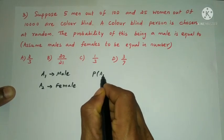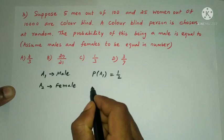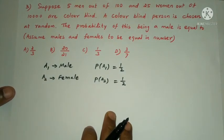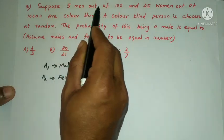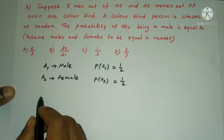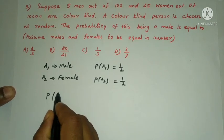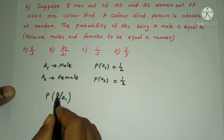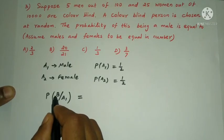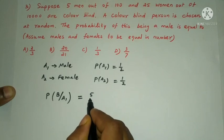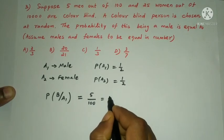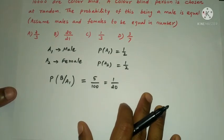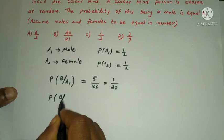P(A1) = 1/2, P(A2) = 1/2. Five men out of 100 are colorblind, so P(B|A1), the probability of a male being colorblind, is 5/100 = 1/20. And P(B|A2), the female colorblind probability, is 25 out of 10,000.